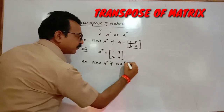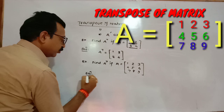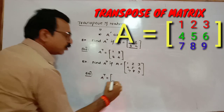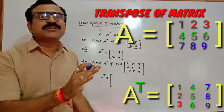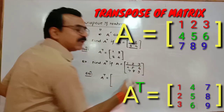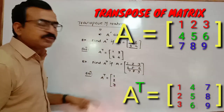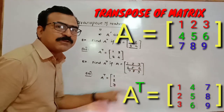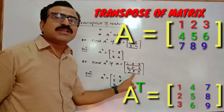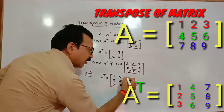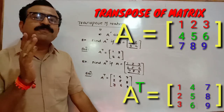Find A transpose if A is equal to this matrix. While finding the transpose, convert the first row into the first column. The first row has three elements: 1, 2, 3 — write them down in a column. Convert the second row into the second column. The second row has three elements: 4, 5, 6 — write them in the second column. The third row has three elements: 7, 8, 9 — write them in the third column.